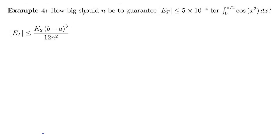Here in example 4, we want to know how big do we need to pick our n so that our trapezoid error is less than 5 times 10 to the negative 4. So that means move the decimal place 4 places to the left, that's 0.0005. And then that's for the integral 0 to pi over 2 cosine x squared.